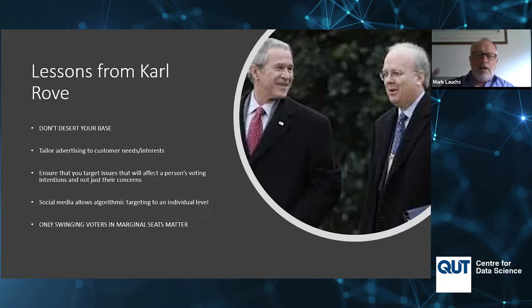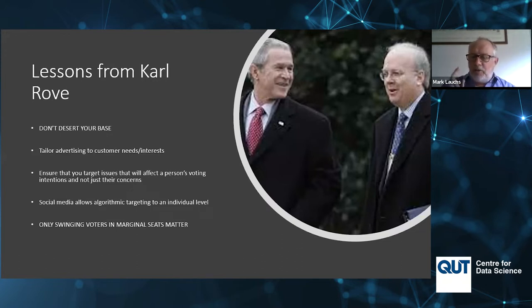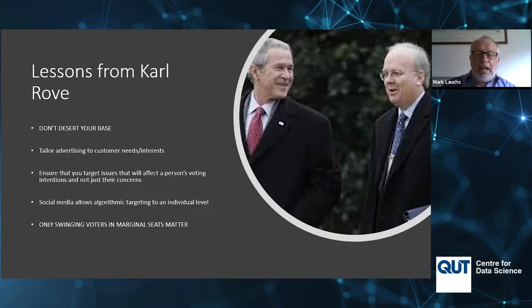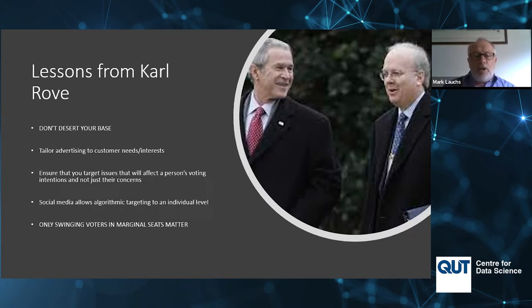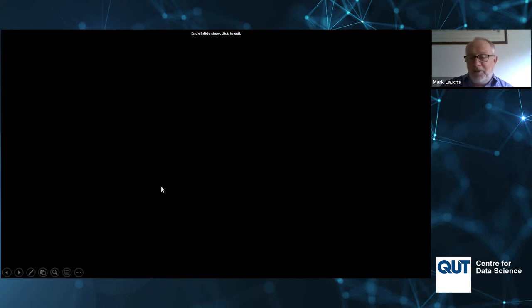Karl Rove got George W. Bush elected as president twice — his rules: don't desert your base, tailor your advertising to the customer needs and interests of the people you're targeting, ensure you target issues that will affect voting intentions and not just concerns. Social media allows algorithmic targeting to an individual level. He was dealing with things in a pre-internet age — it started with physical letters to people, but now you can do things that were unimaginable back then. And ultimately, only swinging voters in marginal seats matter — that's where you put all your effort. That's what we actually saw in the conversation about where the politicians are.